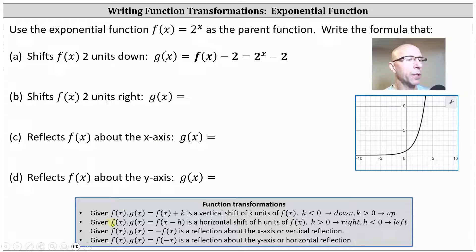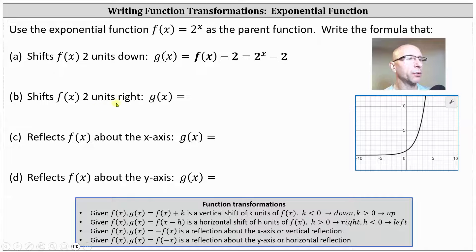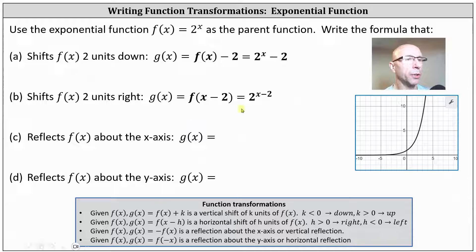Going back to our notes, given f of x, g of x equals f of the quantity x minus h is a horizontal shift of h units of f of x, where if h is positive or greater than zero, the shift is right, and if h is less than zero or negative, the shift is left. We want to shift two units right, and therefore we use a positive two for h, giving us g of x equals f of the quantity x minus two, indicating g of x equals two to the power of the quantity x minus two.